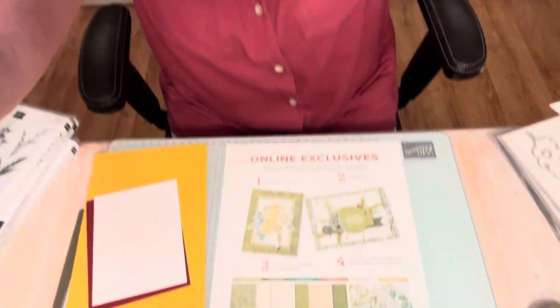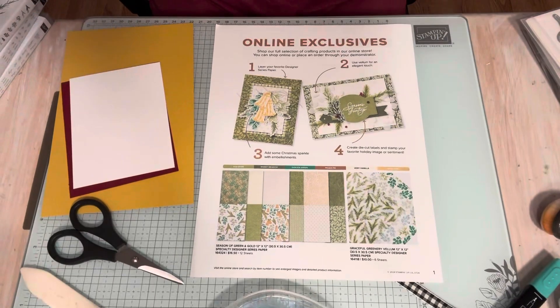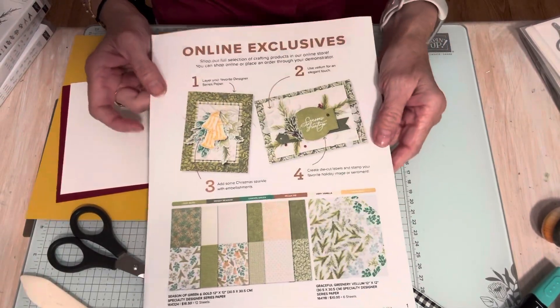Today I'm going to show you a lot of new product. We have 40 new online exclusives that just hit on July 3rd. So I am going to be using one of those stamp sets, actually two of those stamp sets. Let me show you some of the new product.